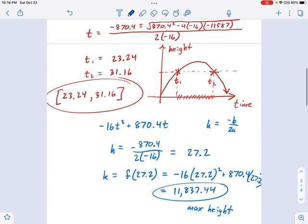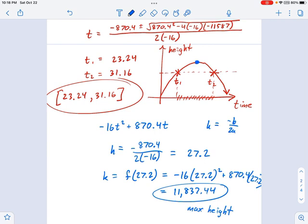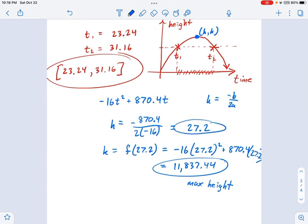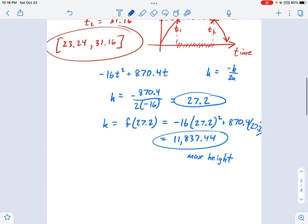Basically what this means is that right there is the maximum height. This is the K value. If you remember what H and K are, they represent the vertex of this parabola. That's the maximum height. H tells you how much time has elapsed. K tells you how high he's gone. So we know the time that he reached the maximum height and the maximum height itself. And we can write this in vertex form.